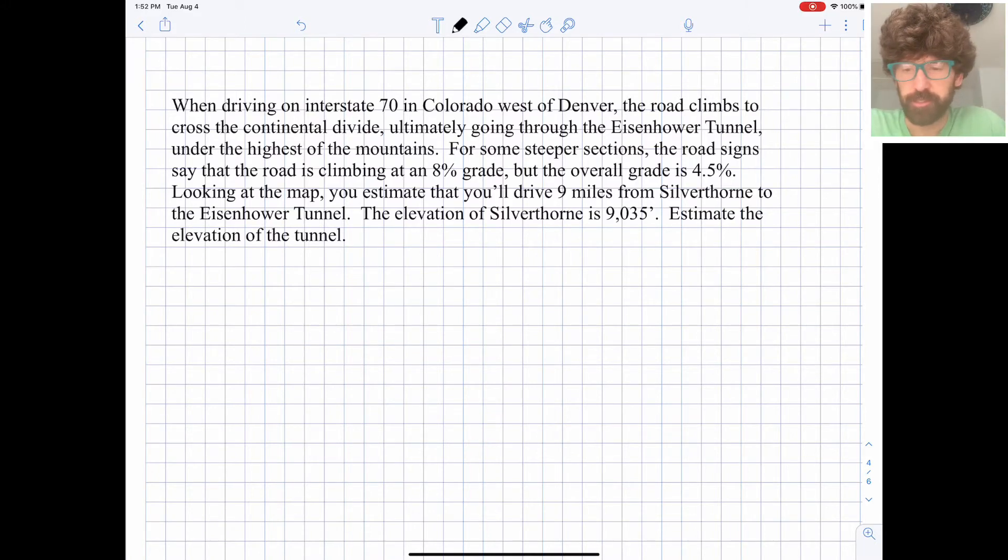This is a true scenario with actual real numbers. So Interstate 70 in Colorado climbs up and over the Rocky Mountains to the west, and it goes through the Eisenhower Tunnel at the crest of the mountains, ultimately under the Continental Divide. For some of the steeper sections, the road signs say that the road's climbing at an 8% grade, but the overall grade is about 4.5% once you get past a little town called Silverthorne. Looking at the map, you estimate that you'll drive 9 miles from Silverthorne to the Eisenhower Tunnel. The elevation of Silverthorne is just over 9,000 feet above sea level, and we're trying to figure out what the elevation of the tunnel will be.